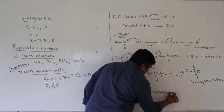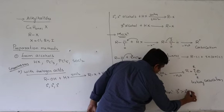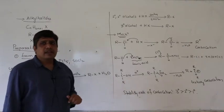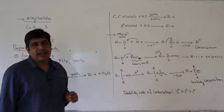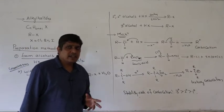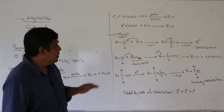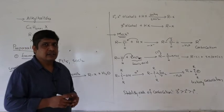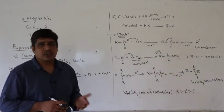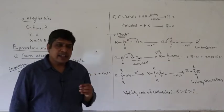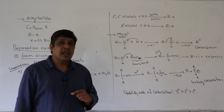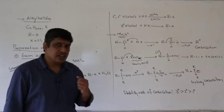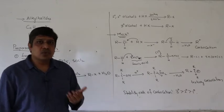Let us recollect the stability order of carbocations. To conclude: primary and secondary alcohols react with HX in the presence of anhydrous ZnCl2, but tertiary alcohols react directly to form the product. The reason is that the reaction proceeds through carbocation intermediate formation. If the carbocation formed is stable, the reaction is fast.